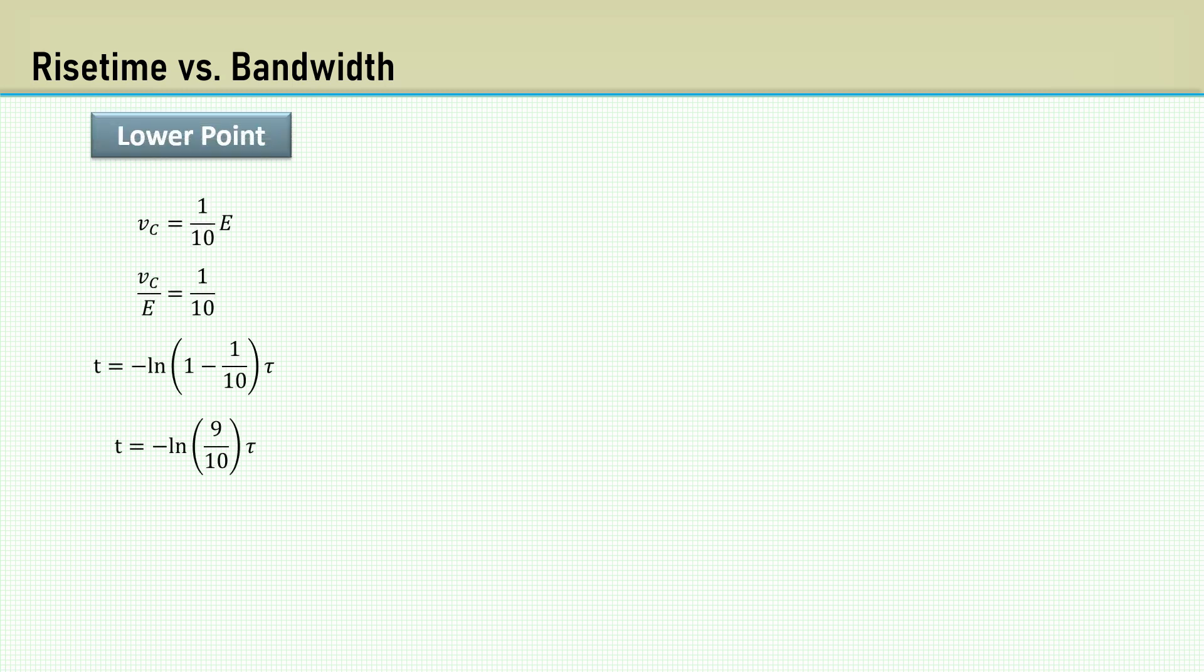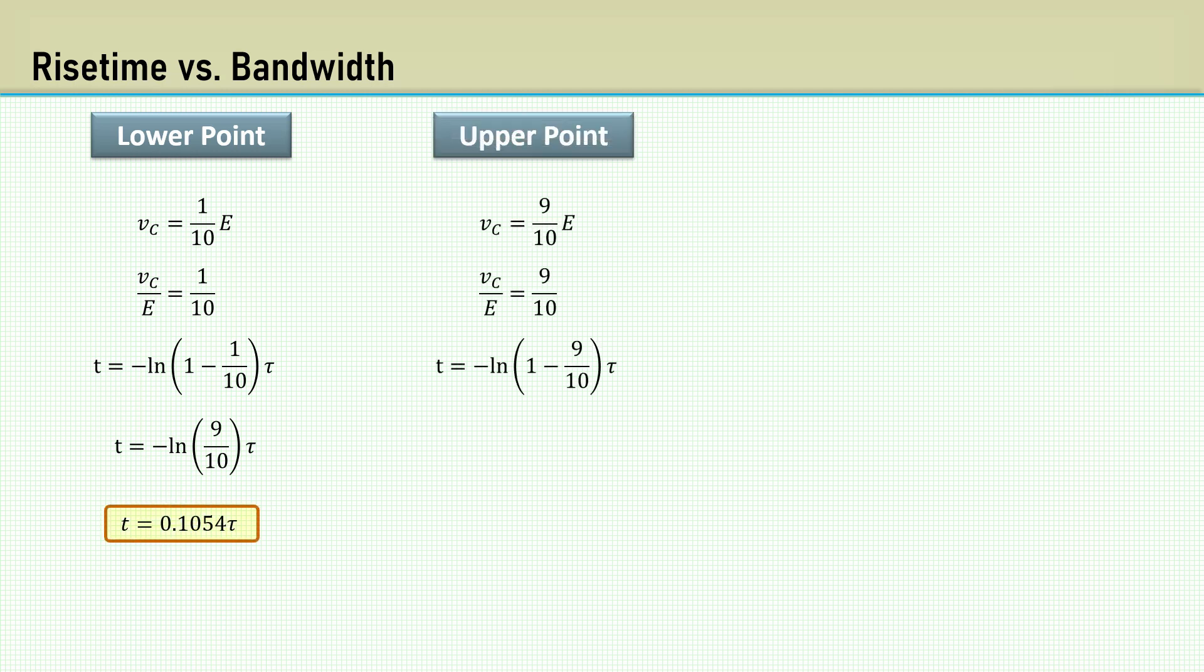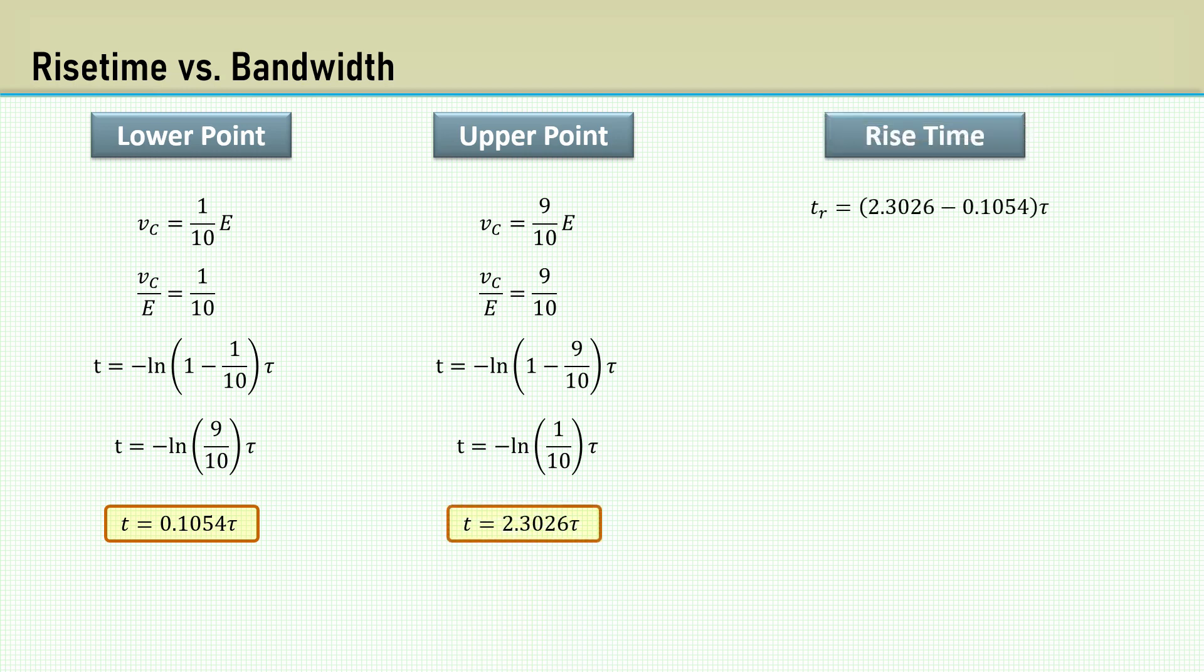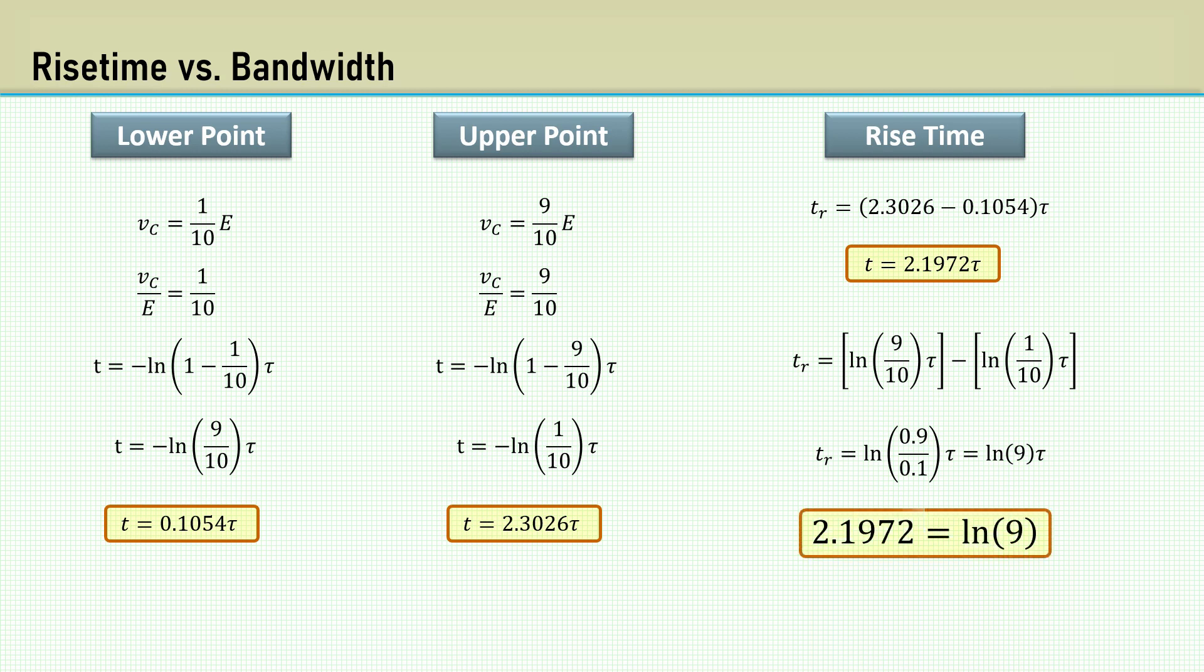We get lucky here because we can use the same method we used in the 555 astable mode. Instead of going from one-third to two-thirds, we calculate the time constants from one-tenth, which gives us 0.1054 tau, to nine-tenths, which gives us 2.3026 tau. Then taking the difference, we get 2.1972 tau. Using the logarithm quotient rule again, we find that 2.1972 time constants is equal to the natural log of 9. This is the rise time.